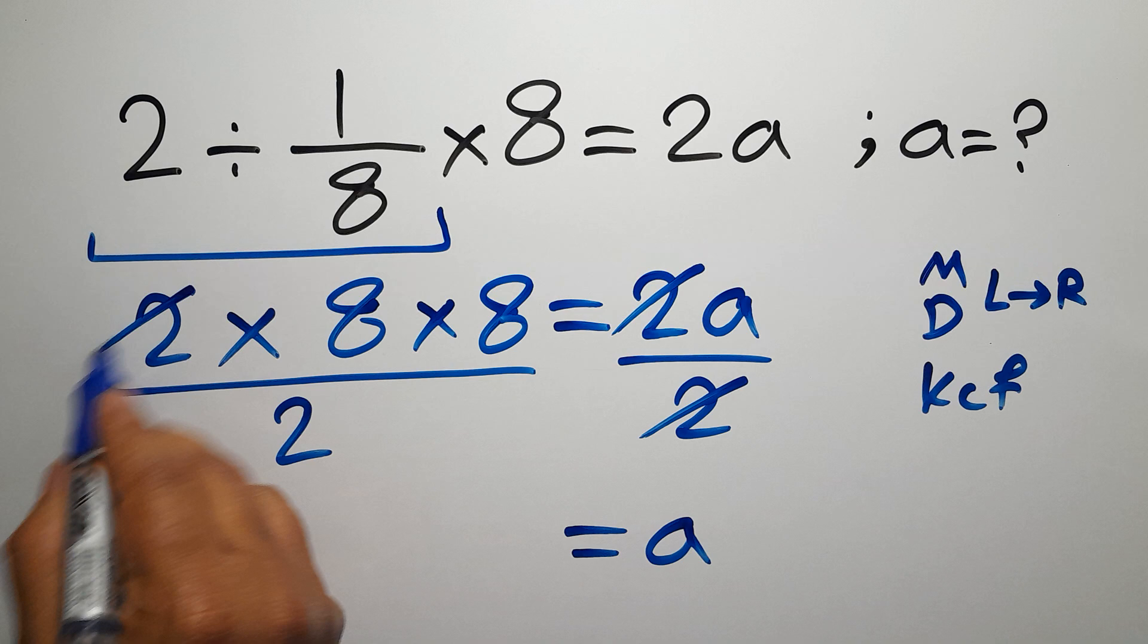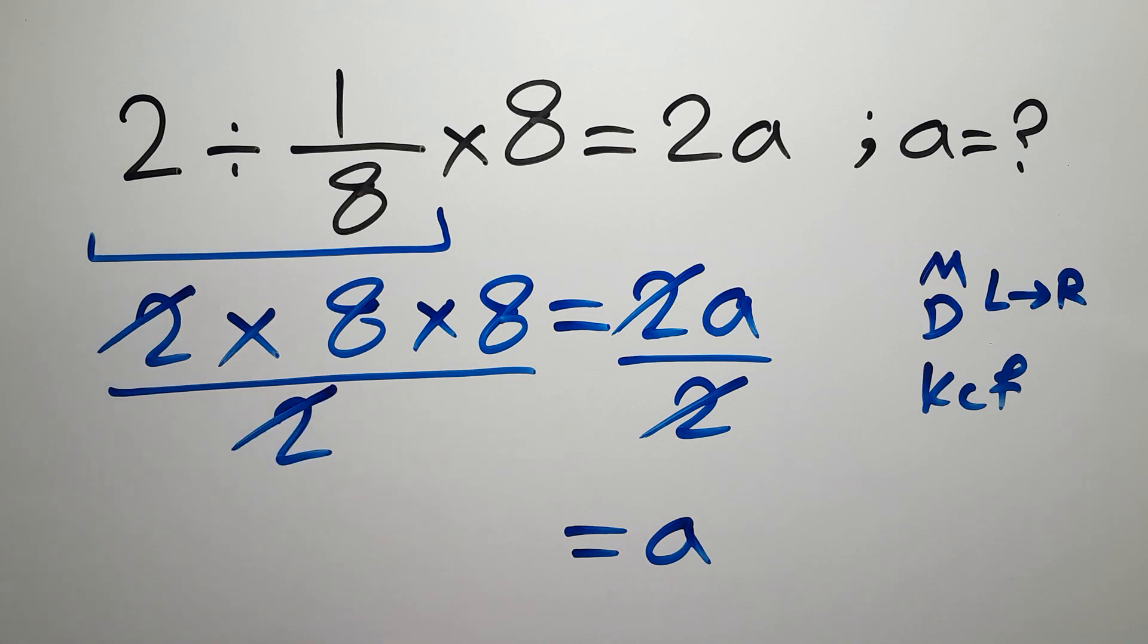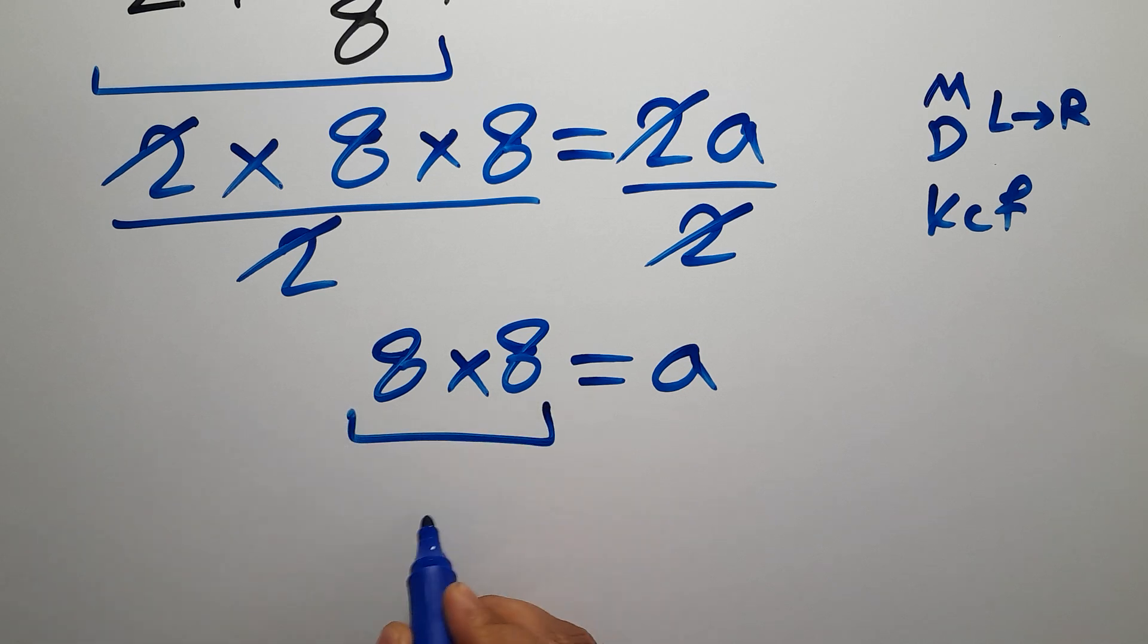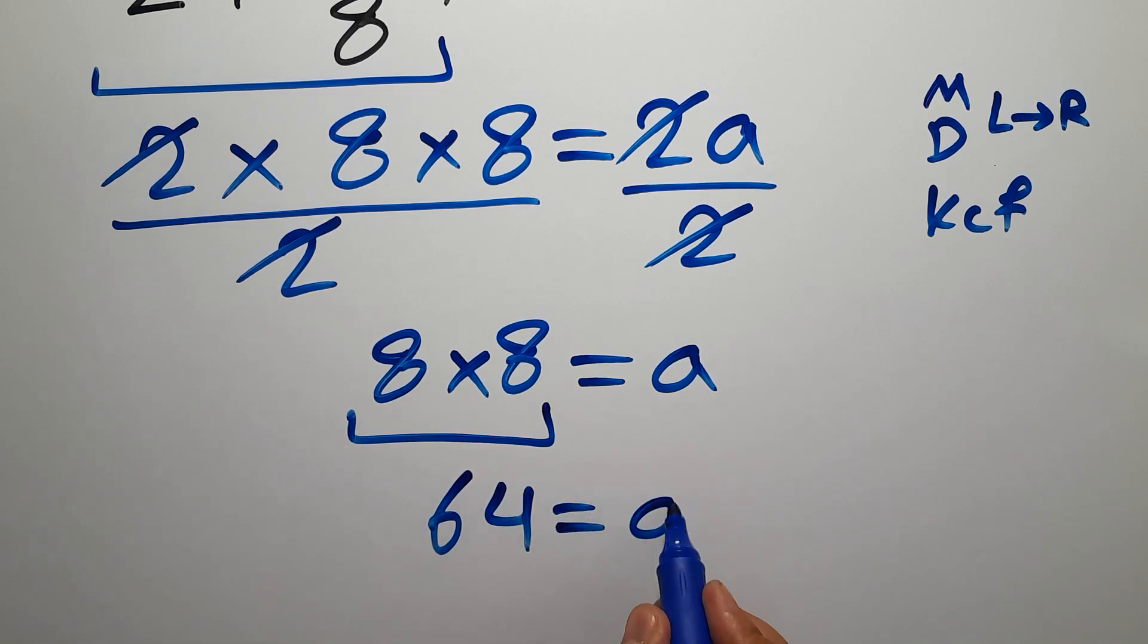And here, these 2 and these 2 can cancel each other out. So we have just 8 times 8. And 8 times 8 is just 64 equals a.